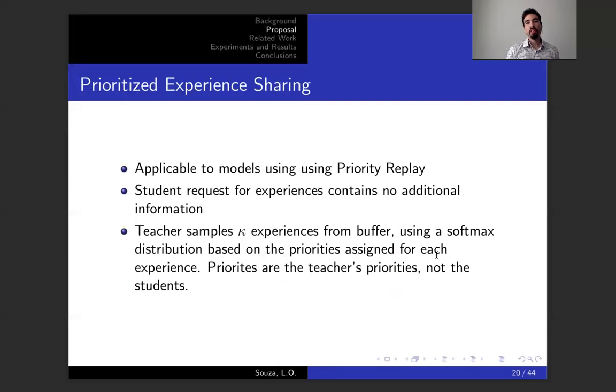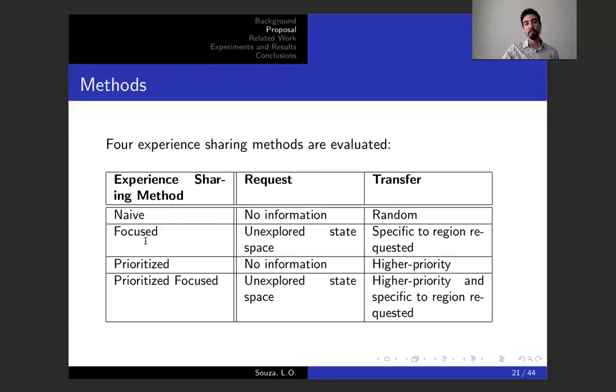Next we have prioritized experience sharing, which is applicable to models which use priority replay. In this case, the student request has no additional information, but when the teacher samples experiences, he uses a softmax distribution based on the priorities he assigned to each of the experiences he has. The priorities are based on the teacher priorities, not the student priorities. Here is the summary of all the four methods: Naive, Focus, and Prioritize. We also investigated the hybrid method of using priority and focus experience sharing.